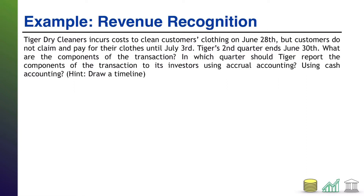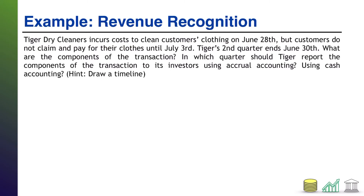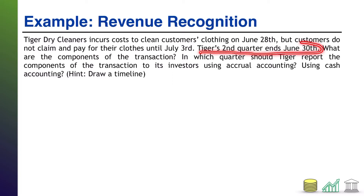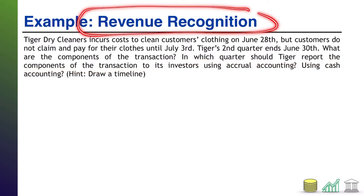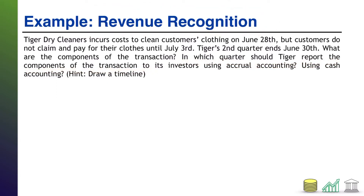Here I have an example where Tiger Dry Cleaners incurs the cost to clean customers' clothes on June 28th. The customers claim and pay for the clothes on July 3rd, and in the middle of those, Tiger's second quarter ends on June 30th. I ask a few questions: what are the components of the transaction — in other words, what's the economic activity going on here — and specifically, we're looking for revenue.